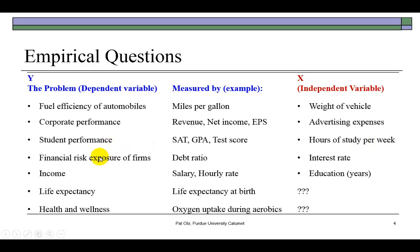For student performance, you might believe that hours of study per week might help explain why some students do poorly and others do very well. For financial risk exposure, you might believe that interest rates might help explain that because as interest rates rise, the cost of raising capital to finance business investments becomes quite expensive and that would also make it increasingly difficult for the firm to pay back debts, which is a financial obligation. Education, perhaps, can be a good explanatory variable for income. The more education you have, the more likely your income is to rise.